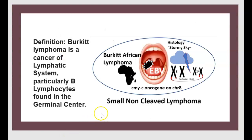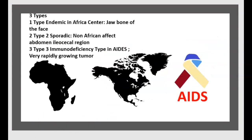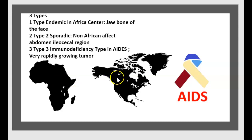The treatment of Burkitt tumor is chemotherapy. There are three types: the endemic African type, the sporadic non-African type, and the AIDS immunodeficiency type.